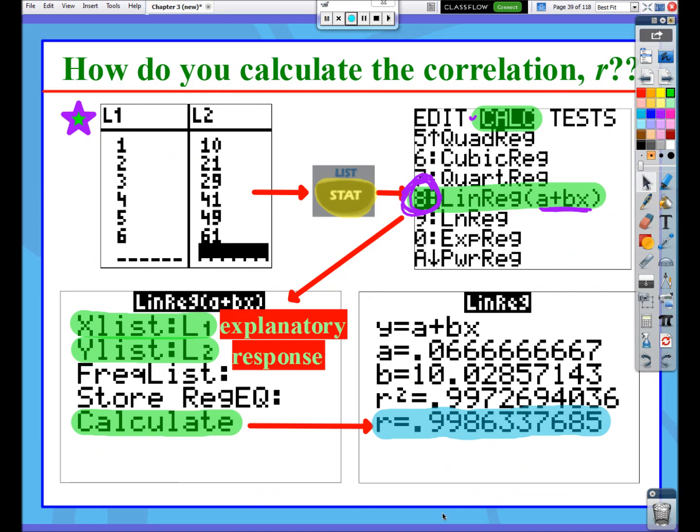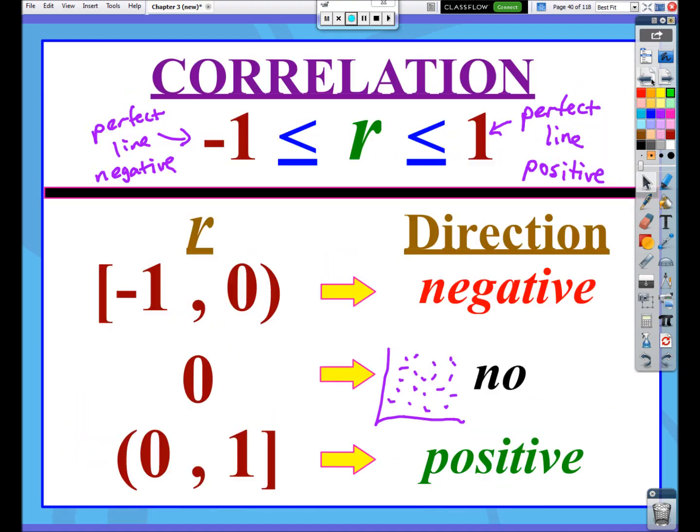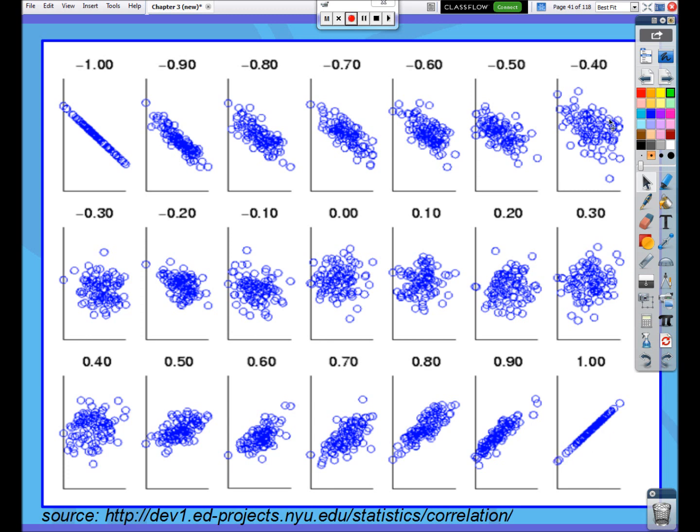Like, remember, the correlation back here was 0.9986. That's really, really close to 1. So if you were to graph and look at a scatter plot of this data, you're going to see something that just about looks like a straight line, because its correlation was nearly 1.